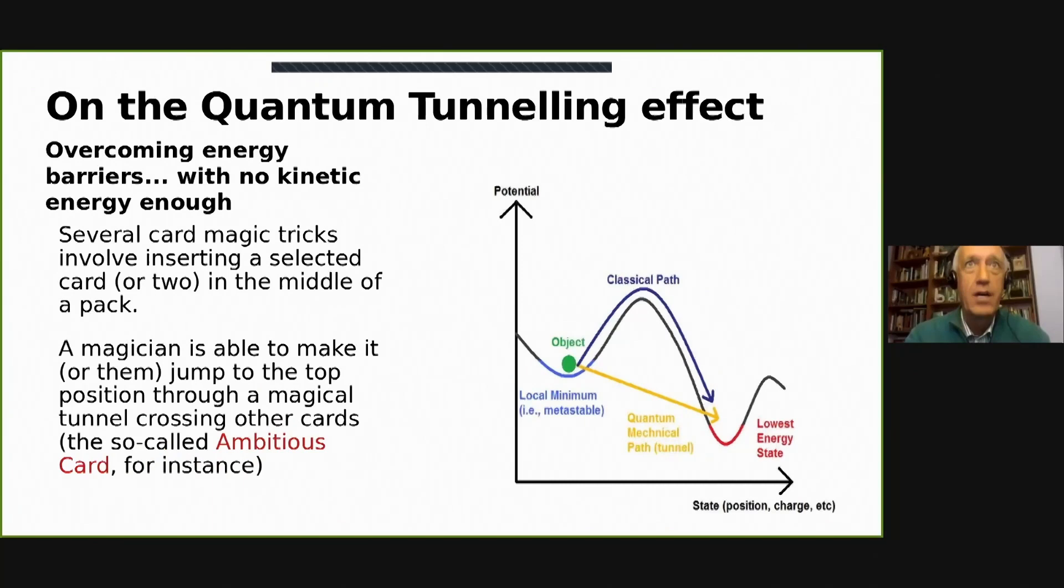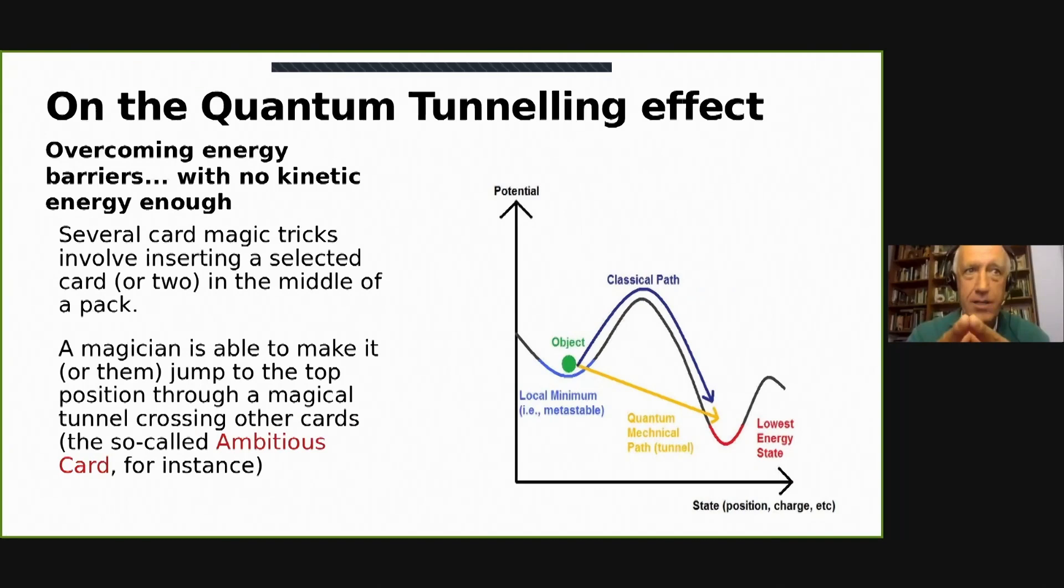Another example that we deliver is the quantum tunnel effect. It's very, very difficult to teach to lay people. So what we do is to use the ambitious card trick, where a card penetrates or crosses a huge amount of cards. So there are several magic tricks that can be done with cards.